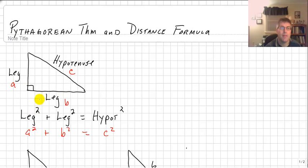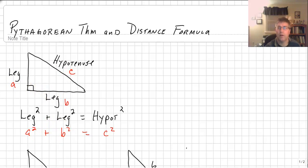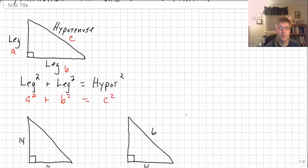The Pythagorean theorem tells us that the length of one leg squared plus the length of the other leg squared equals the length of the hypotenuse squared. So leg squared plus leg squared equals hypotenuse squared, or as you probably remember, it's a squared plus b squared equals c squared. If a is one of the legs and b is one of the legs, then c is the hypotenuse.